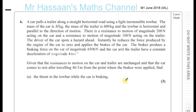I'm going to answer a question from Mechanics M1 June 2018 International A-Level paper. A car pulls a trailer along a straight horizontal road using a light inextensible tow bar. The mass of the car is m kilograms (unknown), the mass of the trailer is 600 kilograms, and the tow bar is horizontal and parallel to the direction of motion. There is a resistance to motion of 200 newtons on the car and 100 newtons on the trailer.